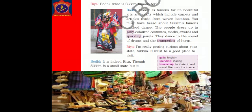Rhea: Bodhi, what is Sikkim famous for? Bodhi: Sikkim is famous for its beautiful arts and crafts which include carpets and articles made from woven bamboo. You must have heard about Sikkim's famous masked dance. The people dress up in gaily colored costumes, masks, swords and sparkling jewels. They dance to the sound of drums and the trumpeting of horns. Rhea: I am really getting curious about your state. Sikkim must be a good place to visit. Bodhi: It is indeed, Rhea. Children, 'gaily' means brightly. 'Sparkling' means shiny. 'Trumpeting' is to make a loud sound like that of a trumpet.